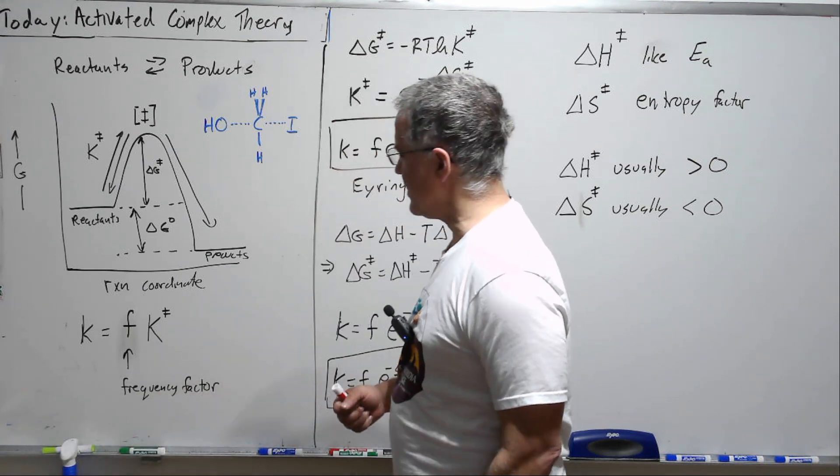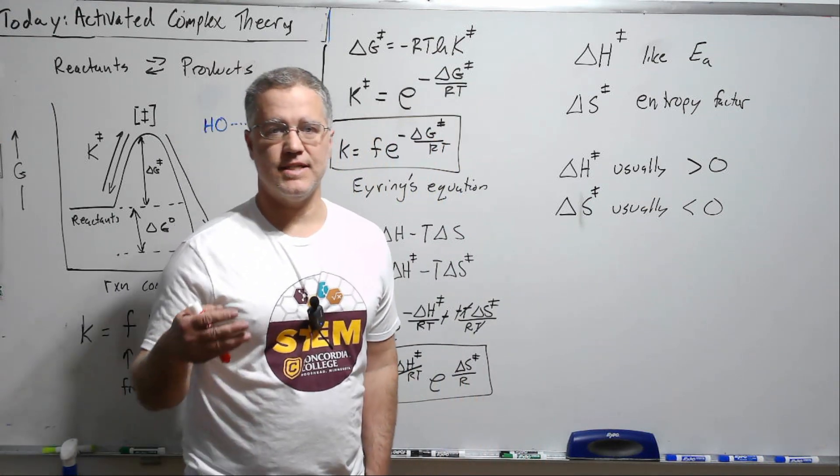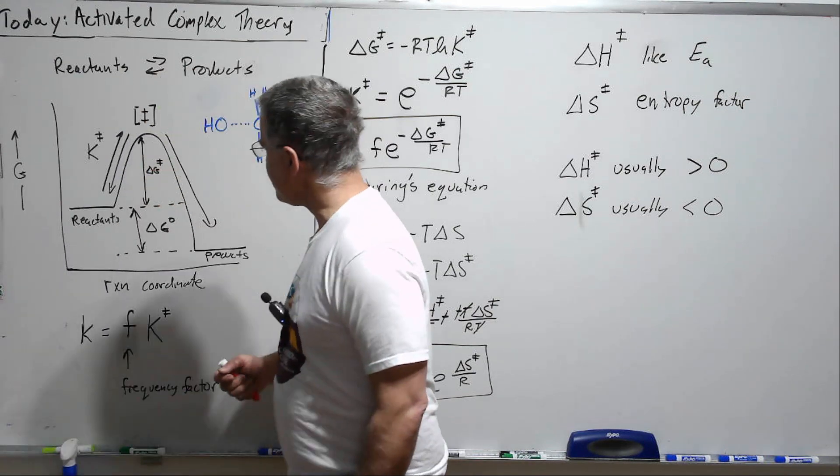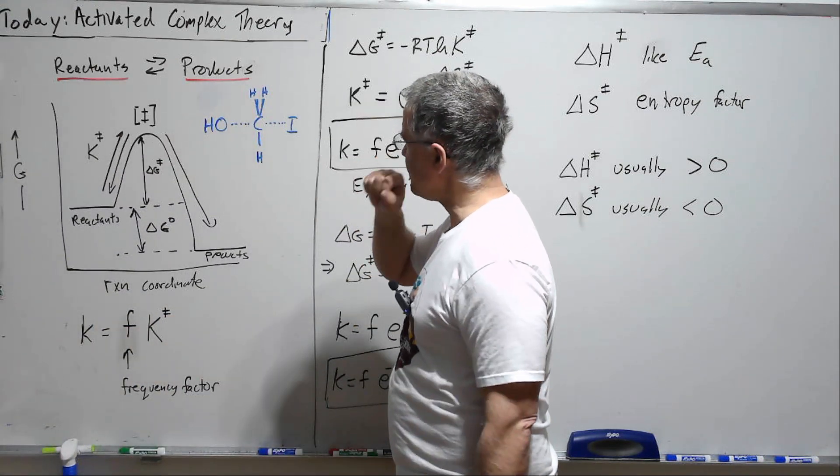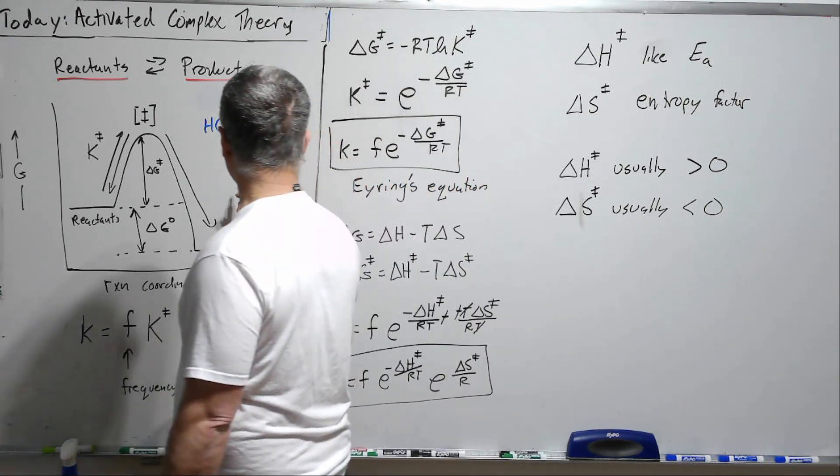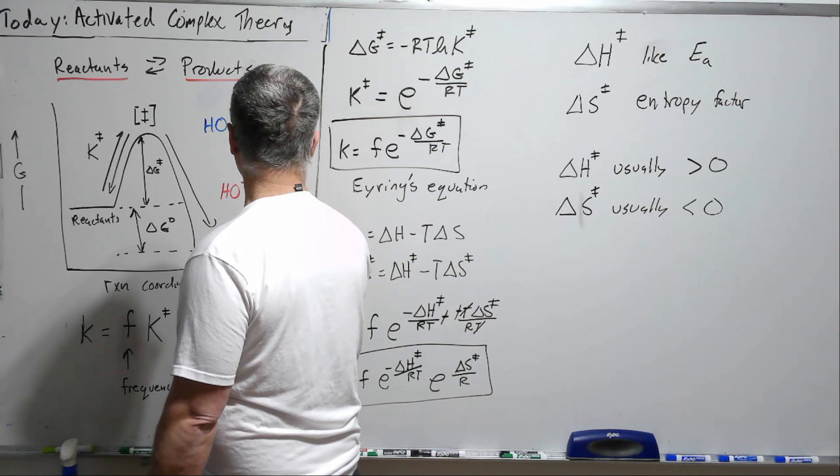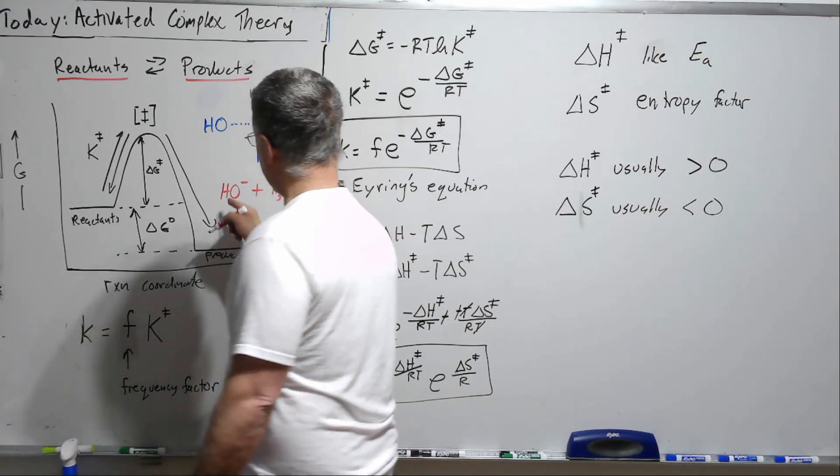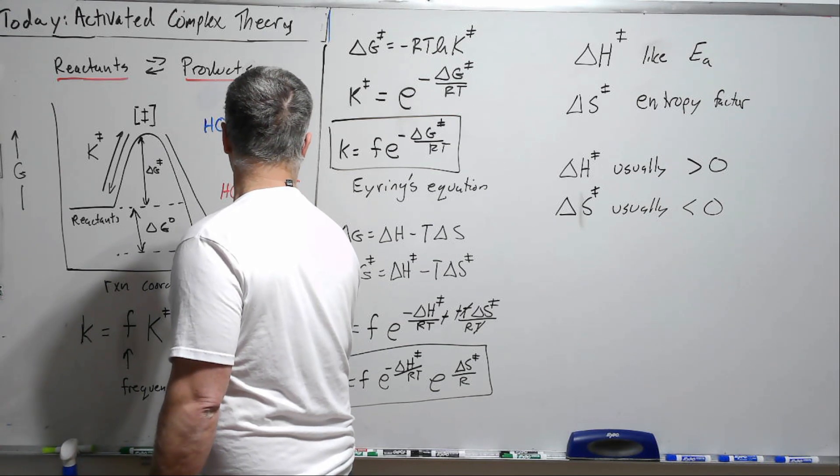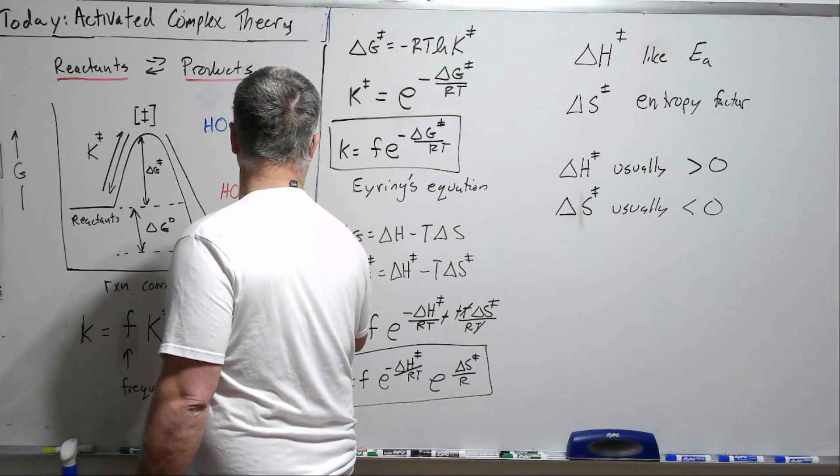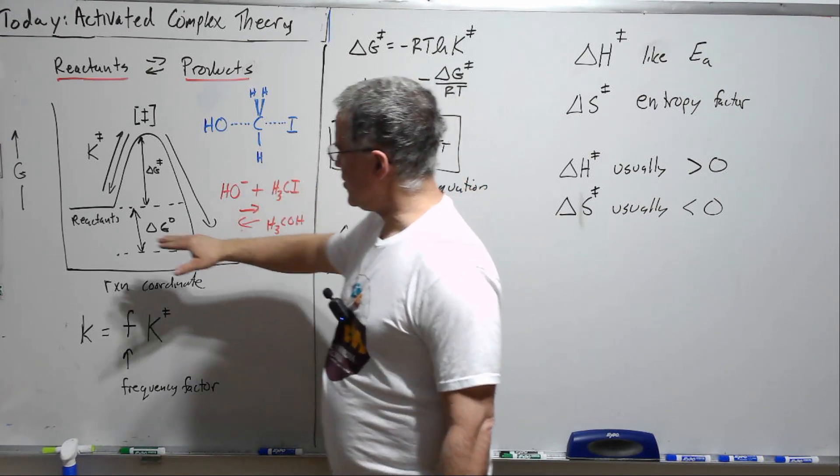And we're going to end up deriving something called Eyring's equation which is another equation for representing the rate constant as a function of temperature just like the Arrhenius rate equation. All right, so let's take a generic reaction reactants to products and as an example let's look at the reaction OH⁻ plus H₃CI that just switches out the OH and the I.